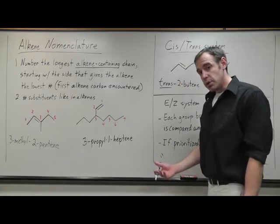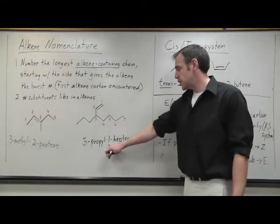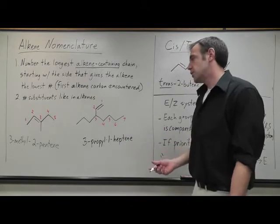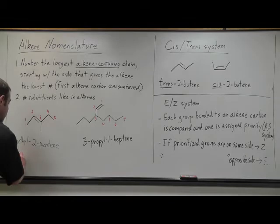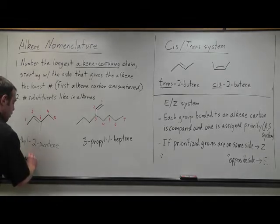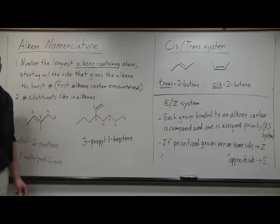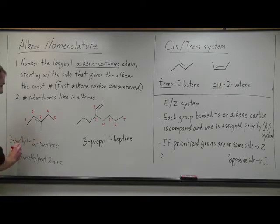Now also you'll find another acceptable way to put the number to describe the alkene is to insert that number in the actual parent chain name right before the ene. So for example, in this one over here, this could also be 3-methyl-pent-2-ene. For simple alkenes, it makes sense to just put it out front. It flows a little better when you pronounce it. But this is also an acceptable name.